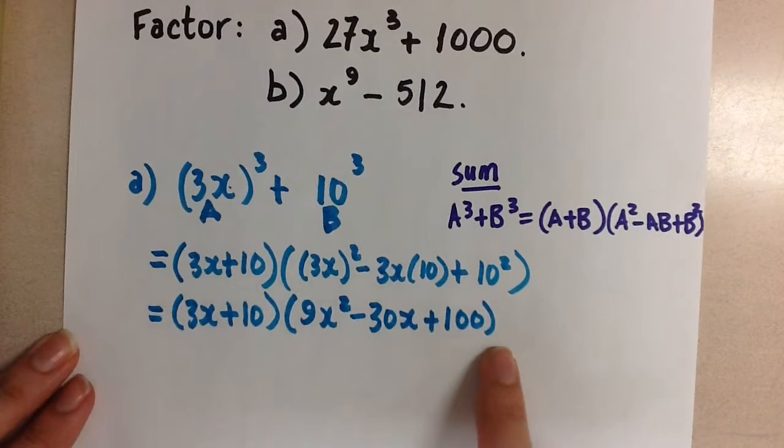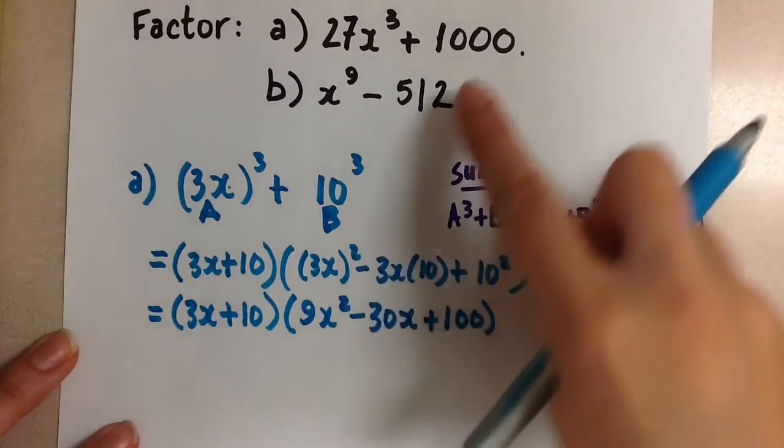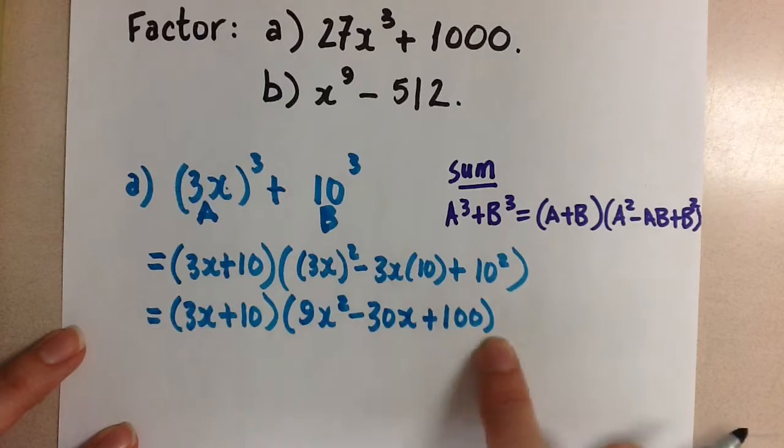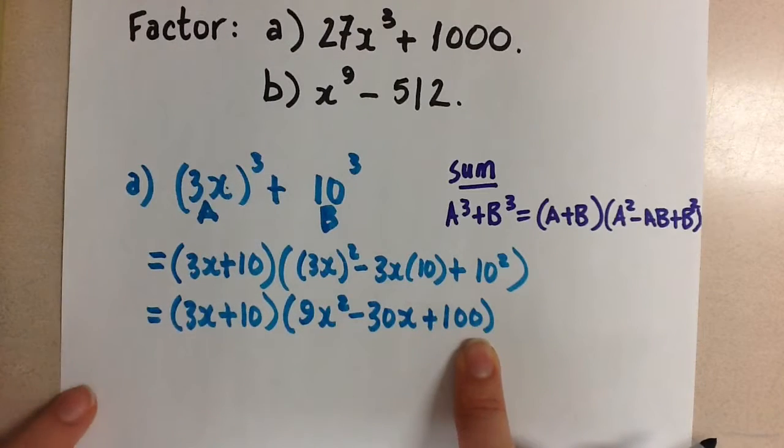So this is the factored form of the original sum of cubes. This here, this quadratic, cannot be factored any further.